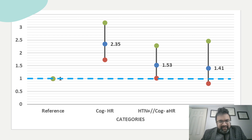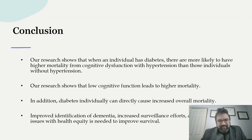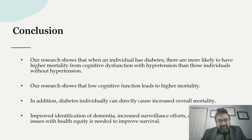So what does this all mean? Our research shows that when an individual has diabetes, they are more likely to have higher mortality from cognitive dysfunction with hypertension than those without hypertension. Our research also shows that low cognitive function leads to higher mortality. In addition, diabetes individually can directly cause increased overall mortality. Understanding and screening for comorbidities such as hypertension and diabetes is extremely important to achieve better outcomes from these diseases and from cognitive dysfunction.